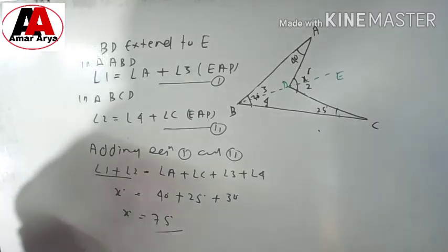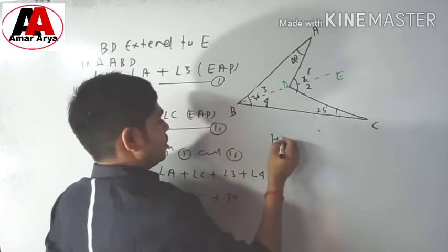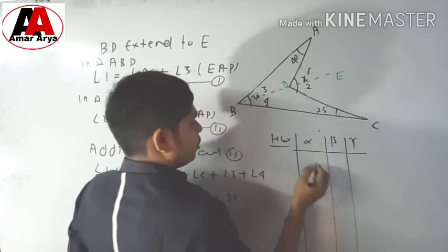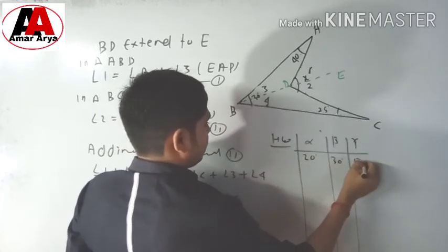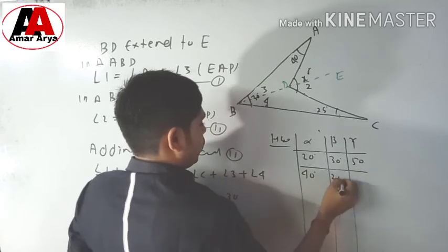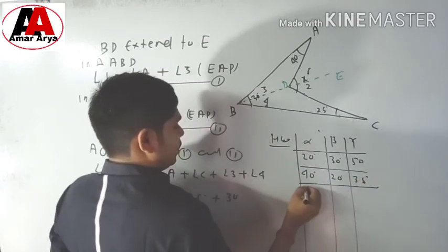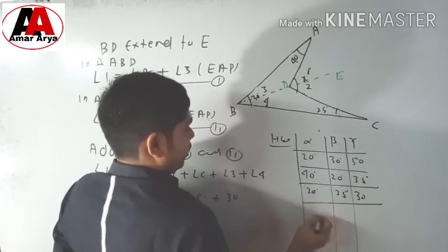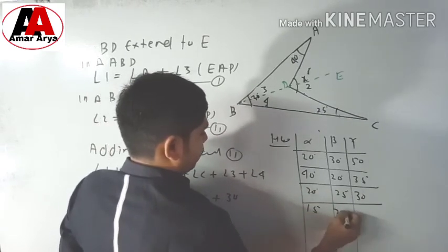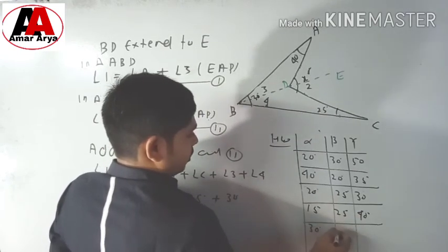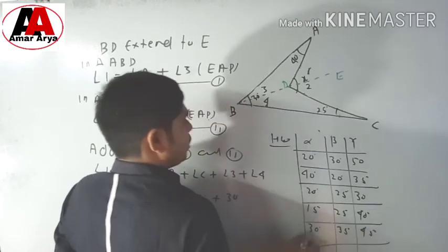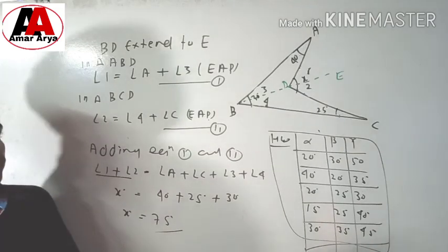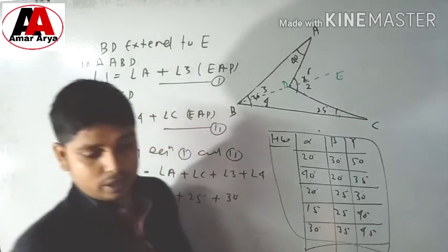This is your homework or assignment. You can see here: alpha, beta, and gamma with values 20, 30, and 50; then 40, 20, and 35; then 20, 25, and 30 — all in degrees; then 15, 25, and 40; and finally 30, 35, and 45. Students, you can solve these questions the same way. Next class we will discuss the next result of this topic. Thank you.